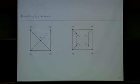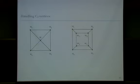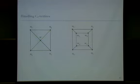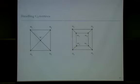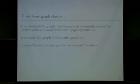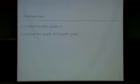Once we have the composition theorem, we handle C4 vertices first. Without loss of generality, we can split each C4 vertex into four new vertices connected in a specific way, eliminating all C4 vertices. This simplifies the leaf structure to essentially two classes: planar bipartite graphs and line graphs of bipartite graphs.